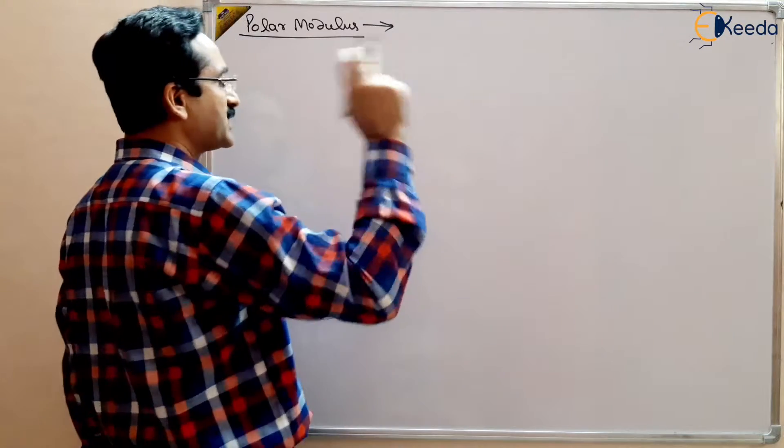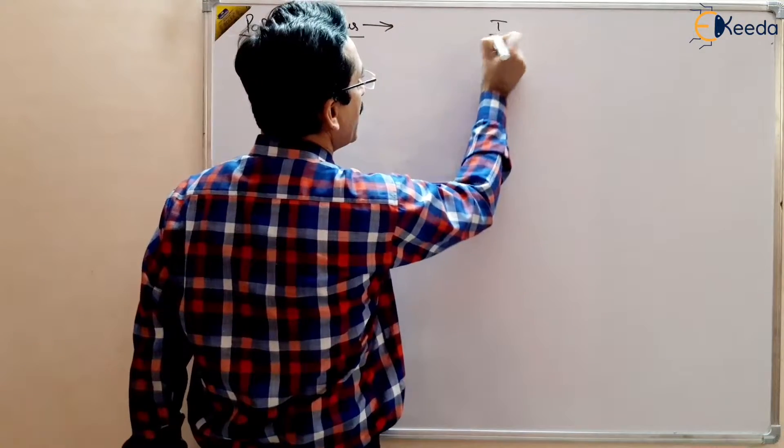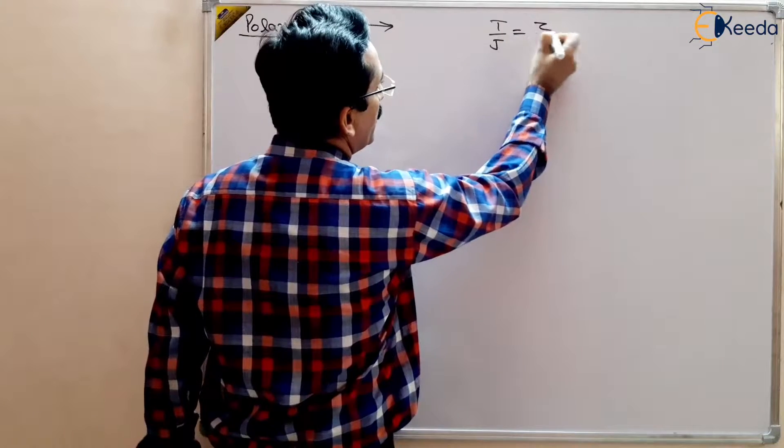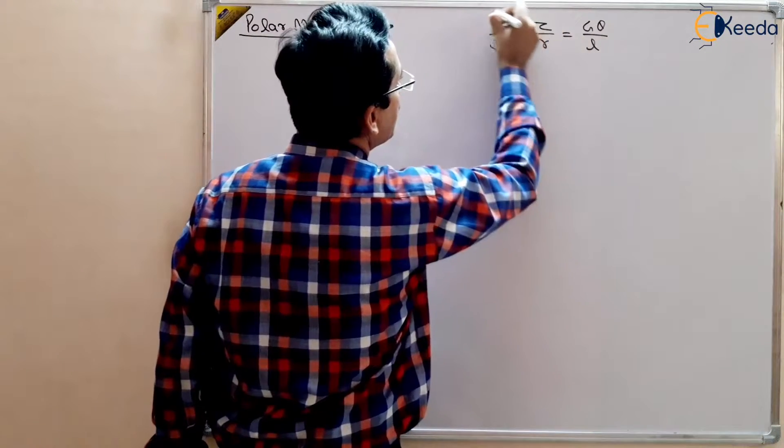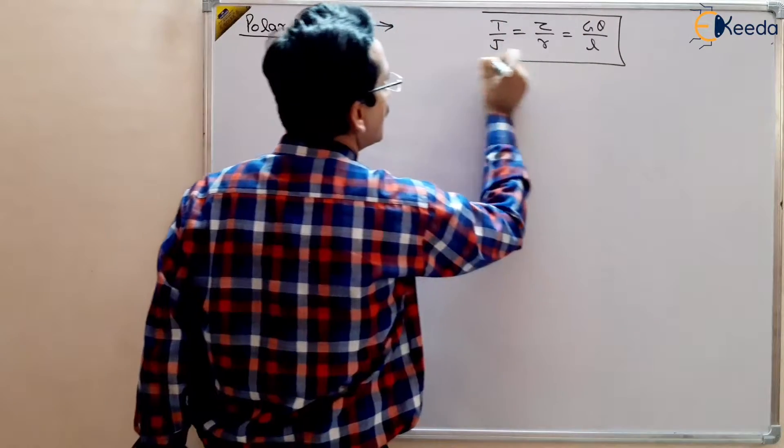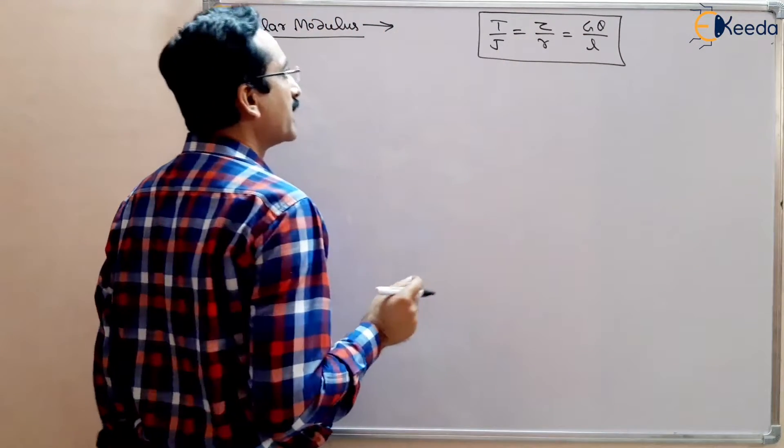Polar Modulus, now in equation, remember the torsion equation: T by J equals tau by R equals G theta upon L. Remember this equation.